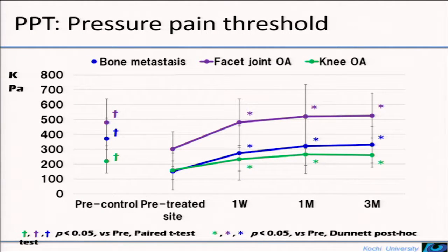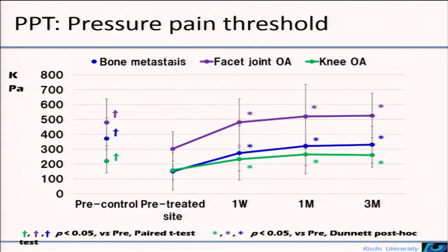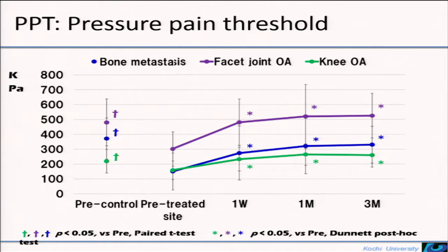In all diseases, PPT at the site of the region was significantly lower compared to those of the control. The PPT at the treated site was significantly higher from one week to three months after treatment compared to before treatment. These results suggested that patients were sensitive in painful areas with less pressure, and that the irritated nerve fibers at the region site were similarly denatured.